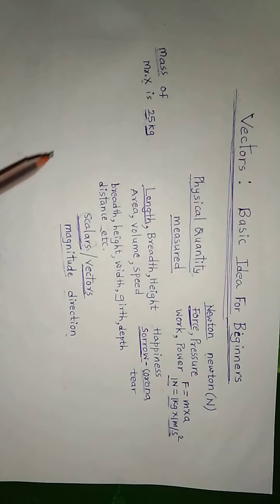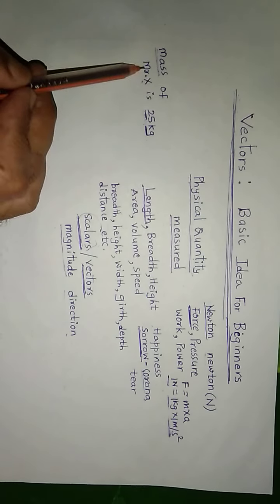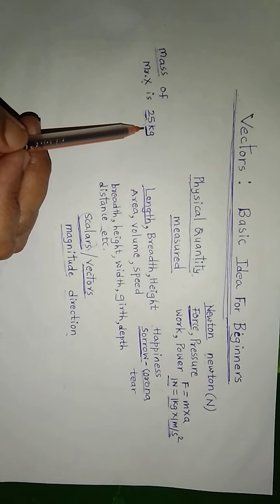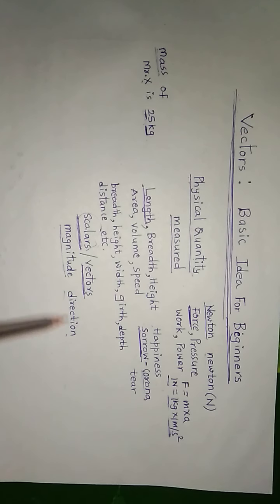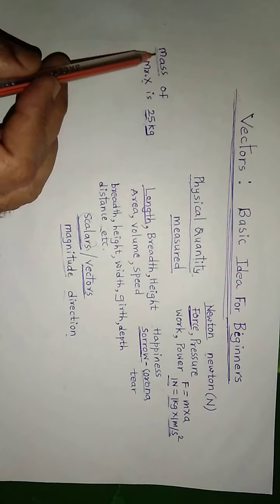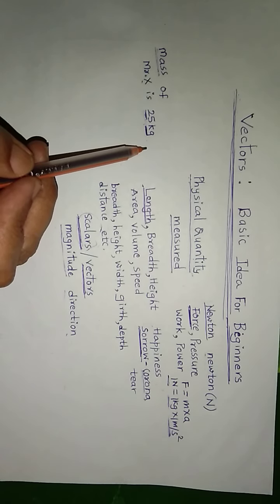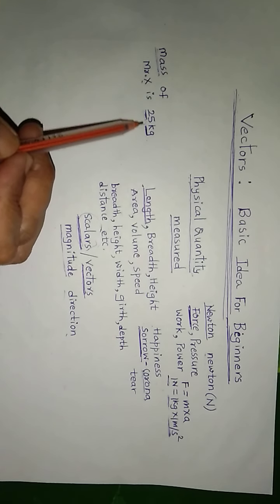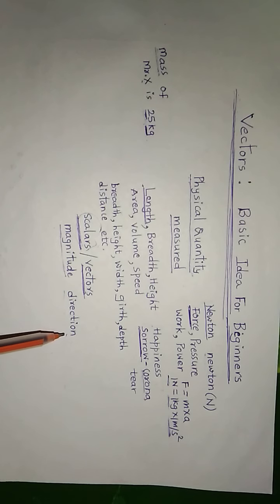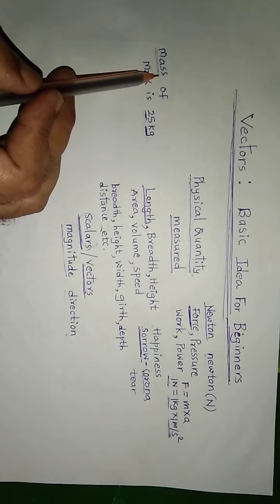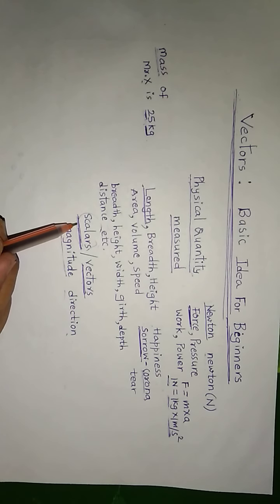Mass does not need direction for its description. When we say mass of Mr. X is 25 kg, the description is complete — we do not need direction to describe mass. We cannot say 'mass of Mr. X is 25 kg in the north direction' or '25 kg in the south direction.' Direction is not at all necessary to describe mass, and that is why mass is a scalar quantity.